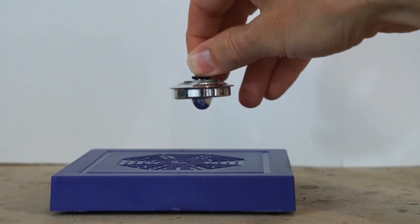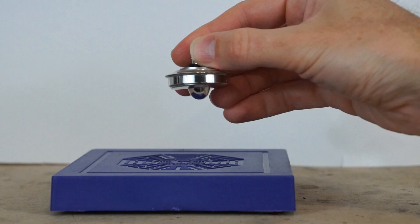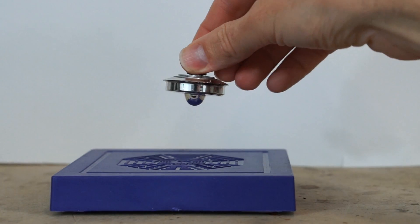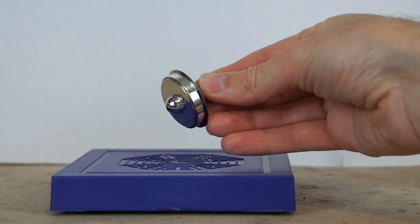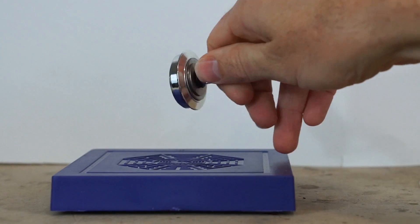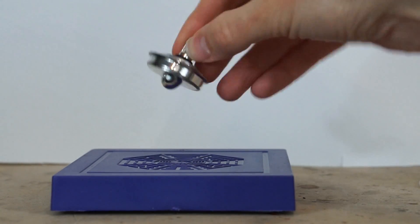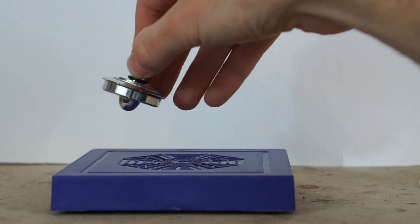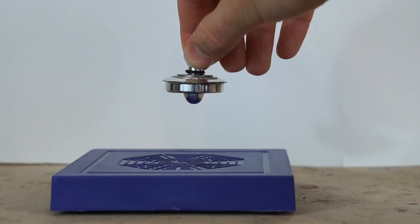But if you spin it, then it makes it stable because spinning gyroscopes, they want to stay in their same plane and they don't want to tip. So if you get it spinning fast enough, then it won't tip over and it'll just stay in this stable region and float above the magnet.